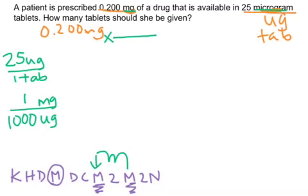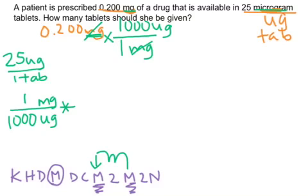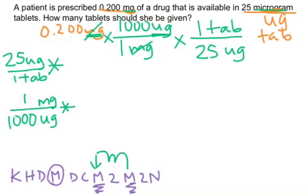Because I have milligrams in the numerator, I want to look for milligrams down here — I see them right there. That's going to be one milligram in the denominator, so those will cancel, and then 1,000 micrograms in the numerator. Now micrograms are in the numerator, and I can use my second conversion factor — put micrograms in the denominator, one tablet in the numerator. Micrograms cancel, and I multiply through the top: 0.200 times 1,000 times 1, divide by 25, and I end up with 8 tablets.